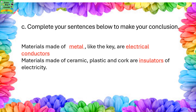Complete your sentences below to make your conclusion: materials made of metal, like the key, are electrical conductors, but materials made of ceramic, plastic, and cork are insulators of electricity.